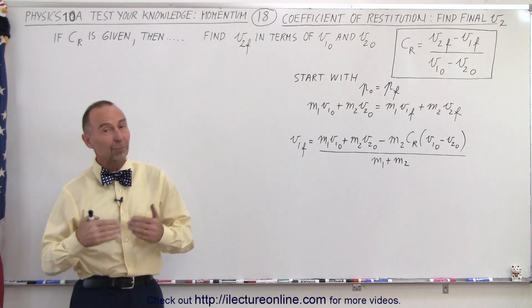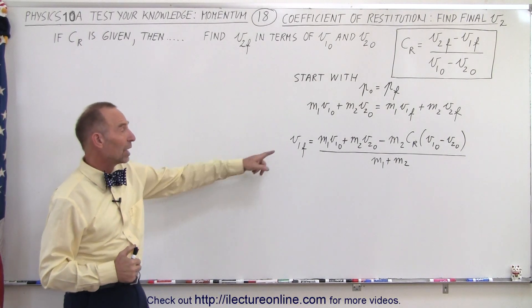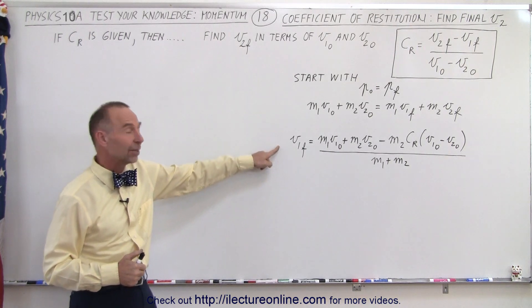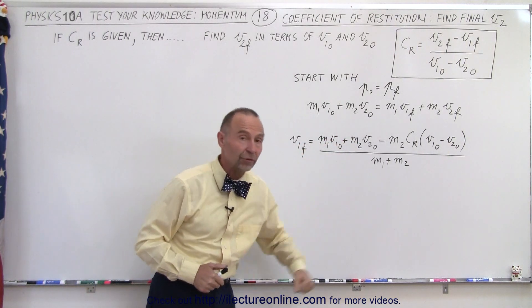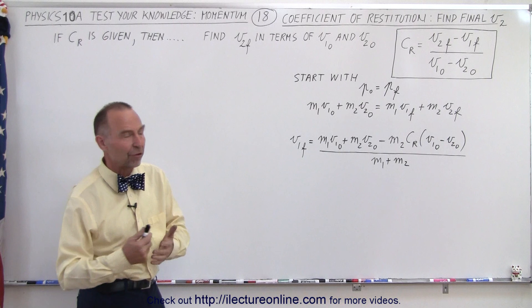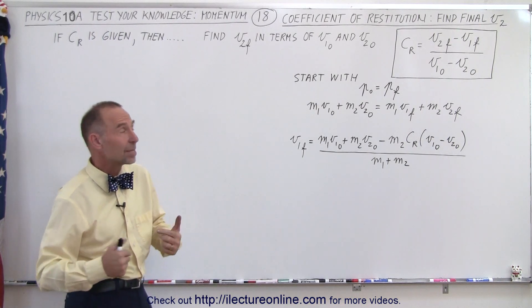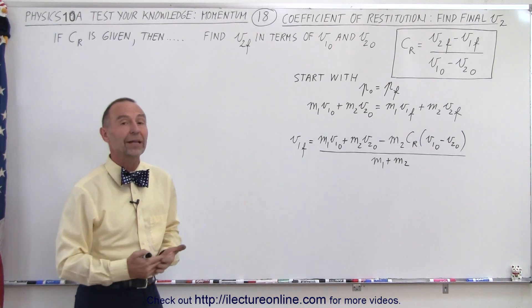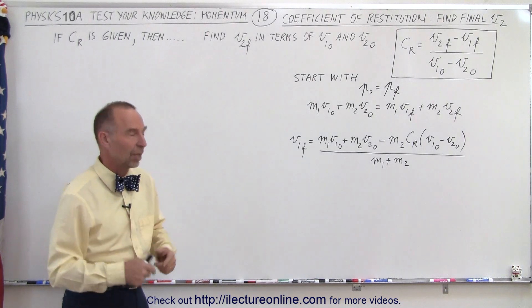Welcome to Electronline. In the previous video we found an equation that gives us V1 final in terms of all the initial velocities given the coefficient of restitution. What we're going to try to do here is find V2 final in terms of the initial velocities.